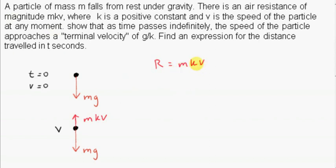This quantity mkv is a magnitude because m is a positive quantity, k is given as a positive constant, and v is the speed — the magnitude of the velocity — which is always positive. So r refers to the magnitude of the resistance force.